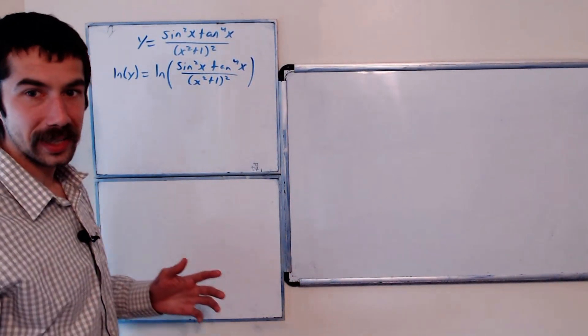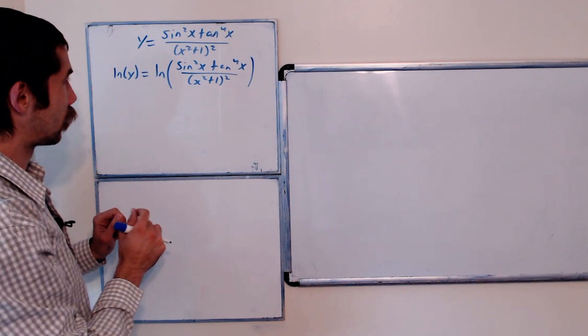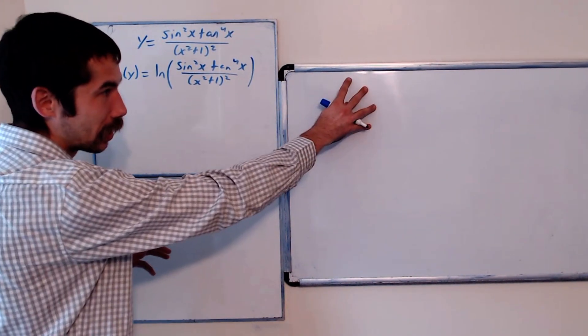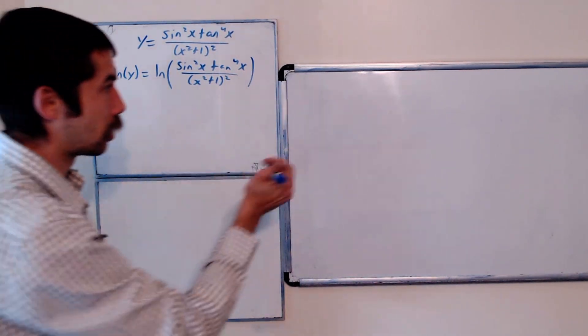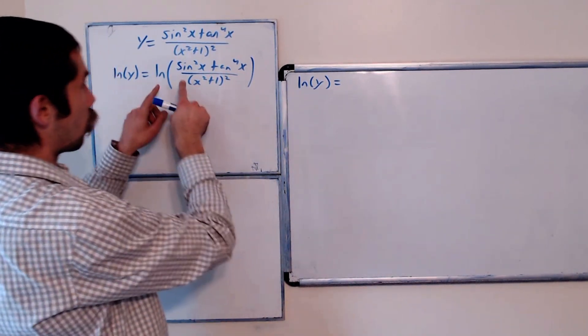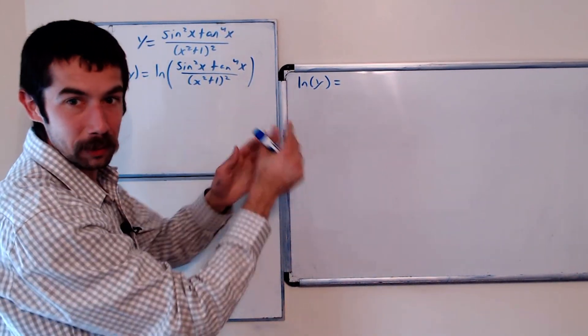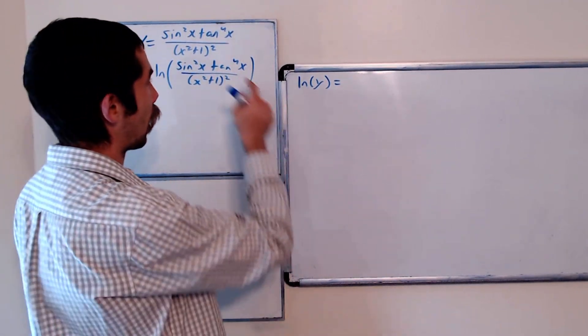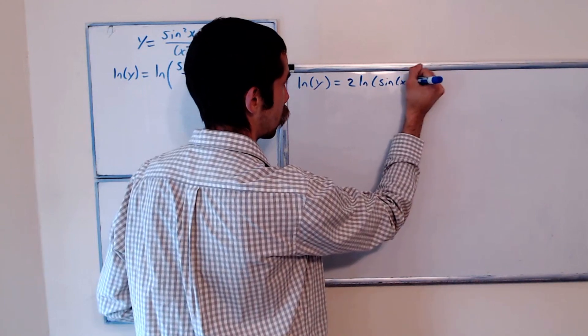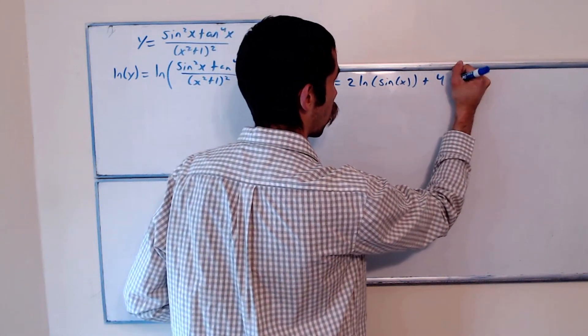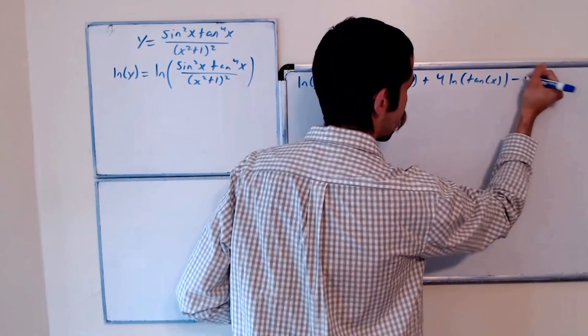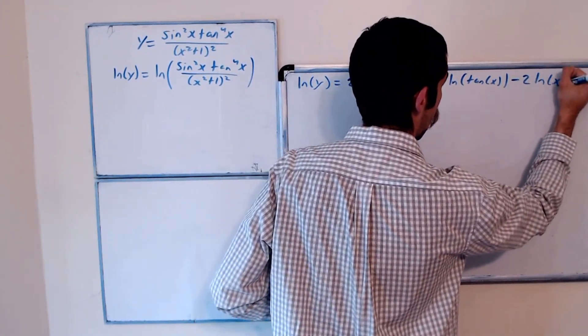And why did we do that? We did that because we could break apart this right hand side using natural log rules. I'll do it on this board because there's not enough space. So we have the natural log of y is equal to, well we could break apart multiplication with addition of logs and division with subtraction, and we could bring exponents in front. So 2 ln of sine of x plus 4 ln of tangent of x minus 2 ln of x squared plus 1.